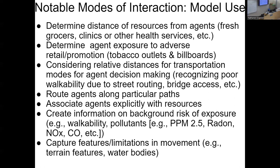One way is agents determine the distance of certain resources from them. How far is the supermarket, the clinic, the health service, or a COVID-19 testing site? They make their decisions based on that distance — maybe they elect whether to go or not based on how far it is. In other cases, we use geographic information to determine agent exposure to adverse retail and promotion efforts, such as tobacco billboards and outlets in the US, or advertising for fast food.